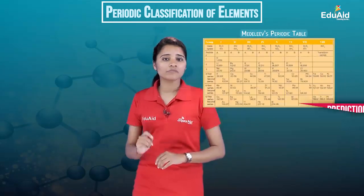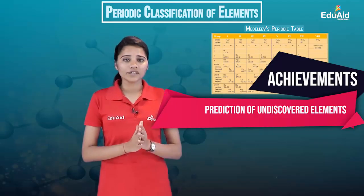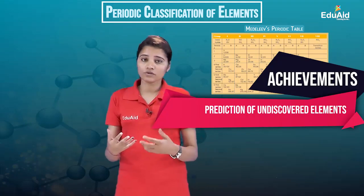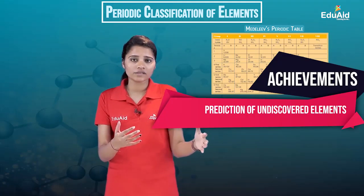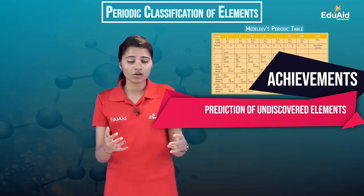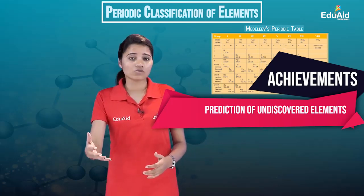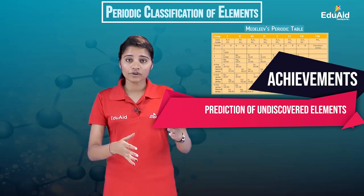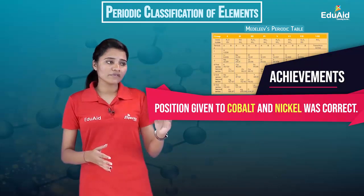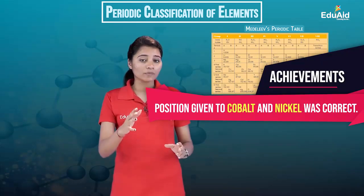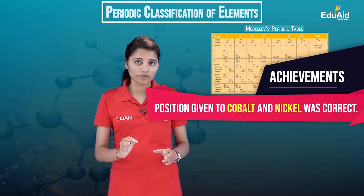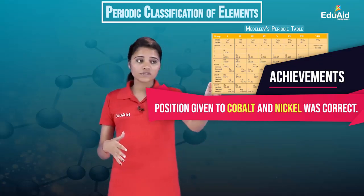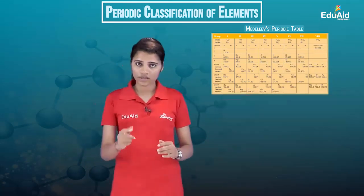The achievements of Mendeleev's table include: he predicted that new elements would be discovered in the future, so he left some positions in the table vacant and also predicted the properties of those undiscovered elements — when those elements were later discovered, his predictions were found to be correct. Also, despite cobalt having a higher atomic mass than nickel, he placed cobalt before nickel based on some properties, and when the new periodic law came into being, this position of cobalt before nickel was also found to be correct.